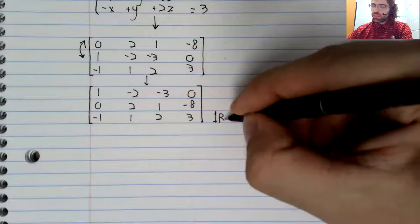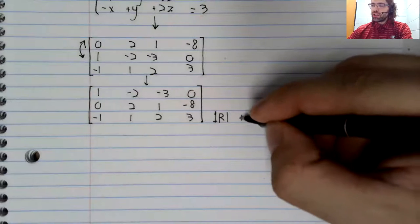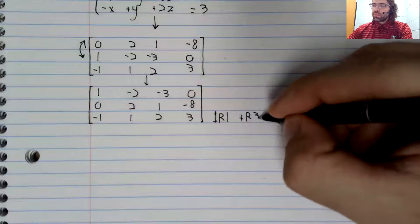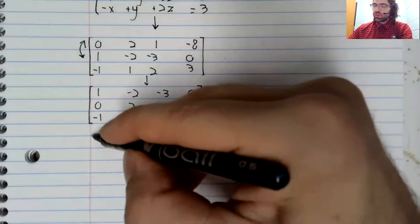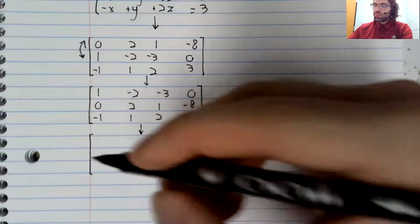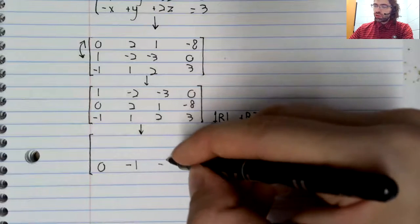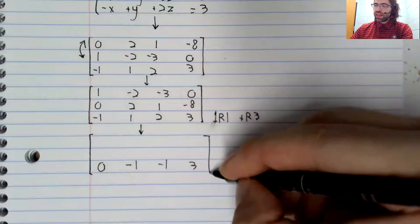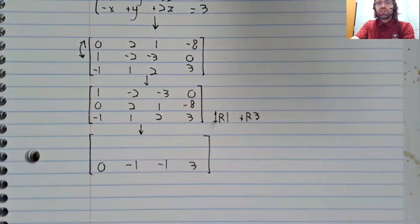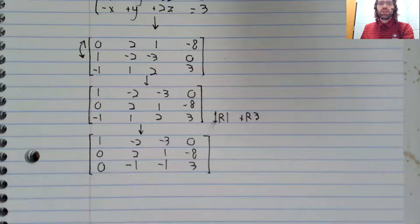We'll multiply the first row by one and add it to the third row. So the third row changes to that. The first and second row aren't being modified.